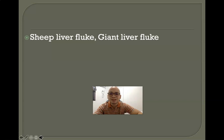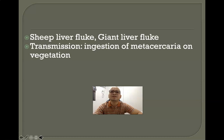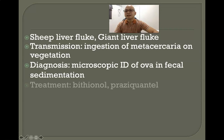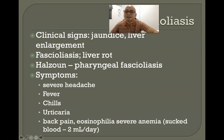Fasciola hepatica is commonly known as the sheep liver fluke or giant liver fluke. The mode of transmission is through ingestion of metacercaria in insufficiently cooked vegetation, such as kangkong. Diagnosis involves microscopic identification of ova in fecal sedimentation, and treatment includes bithionol and praziquantel.